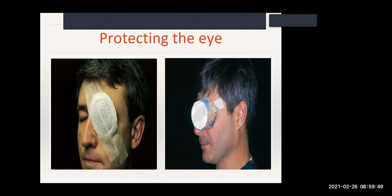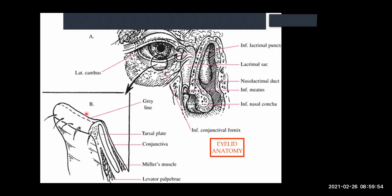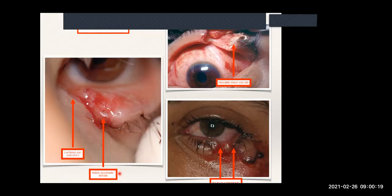Now let's talk about eyelids. The most important thing to remember is the tarsal plate. When the eyelid is open, there is a grayish, semi-solid, cartilaginous plate that sits in the eyelid - that's called the tarsal plate. Remember that as we go forward into eyelid trauma.